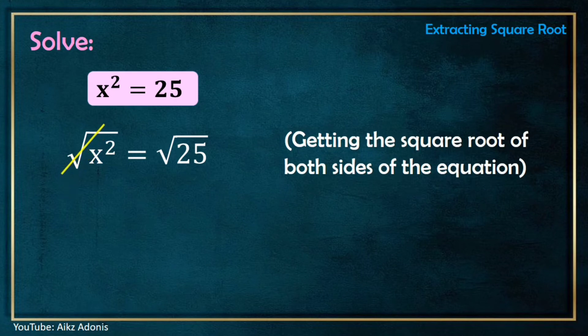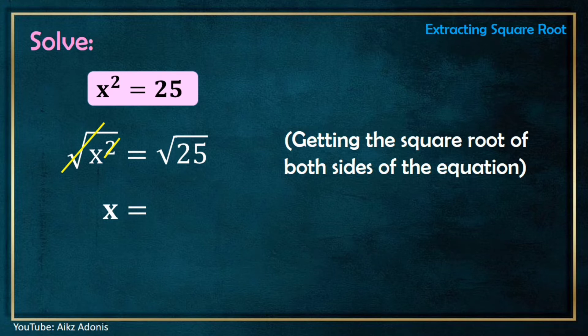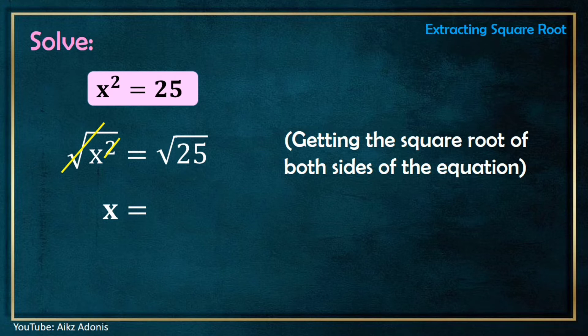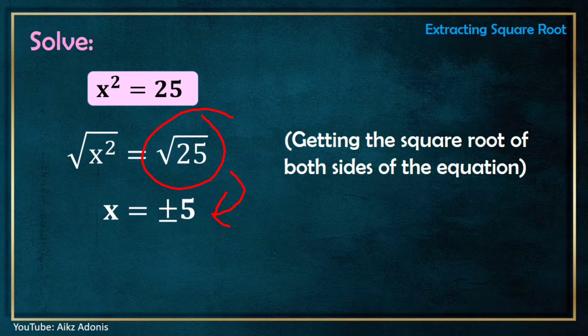The square root of x² is x. As you can see, we cancelled out the square root symbol and the exponent. This is like a shortcut — we are finding the number that when multiplied by itself gives x². So x times x equals x². Similarly, what number multiplied by itself gives 25? It is 5, because 5 × 5 = 25. Therefore, the square root of 25 is positive or negative 5.